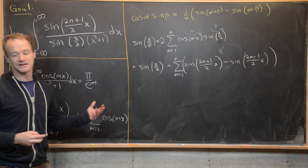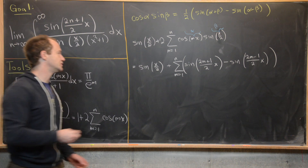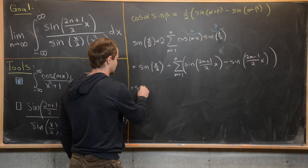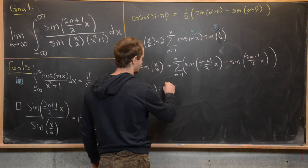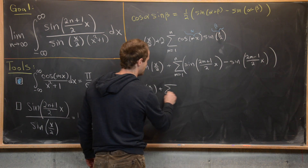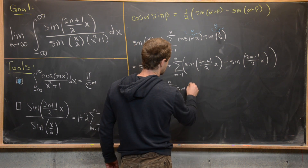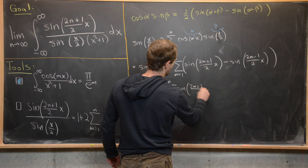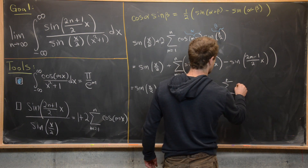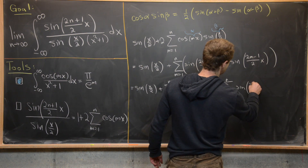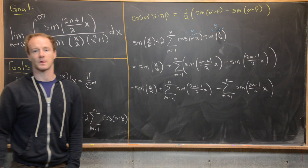Since this is a finite sum, we can split it into two separate sums: sine(x/2) plus the sum from m=1 to n of sine((2m+1)/2 · x), minus the sum from m=1 to n of sine((2m−1)/2 · x).